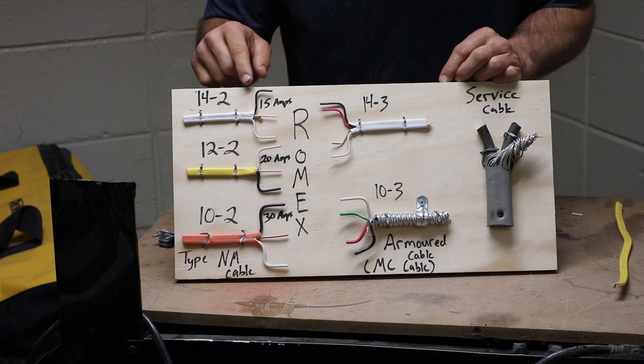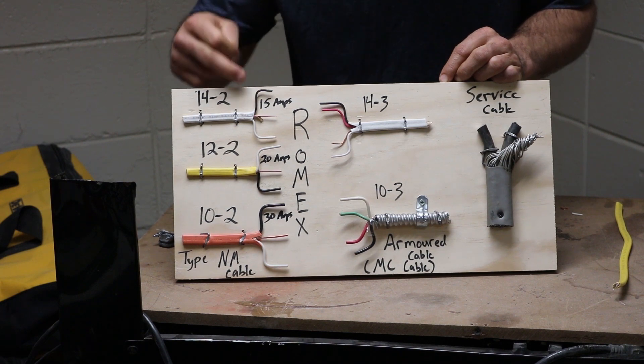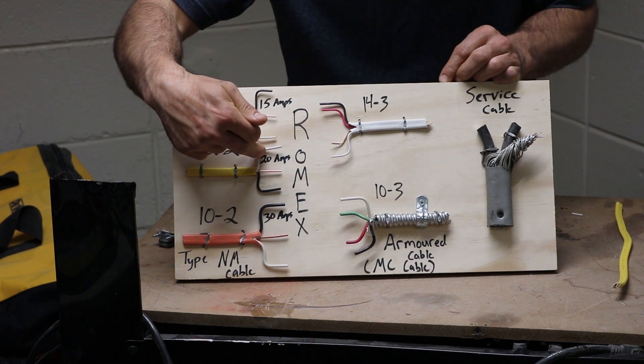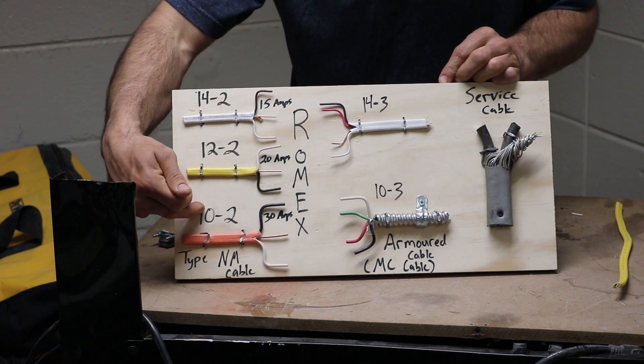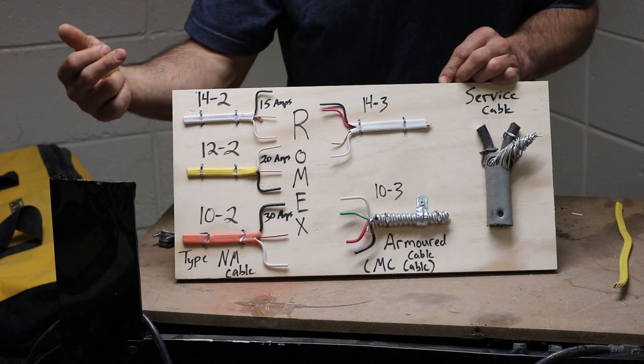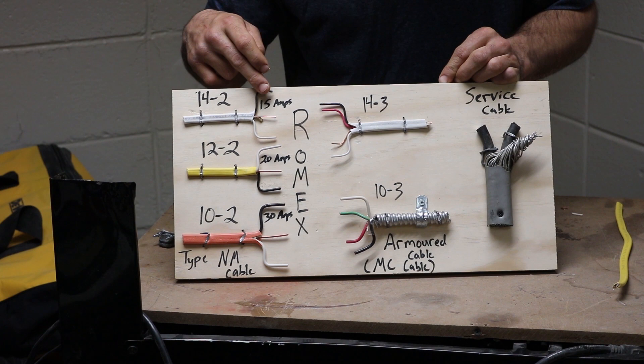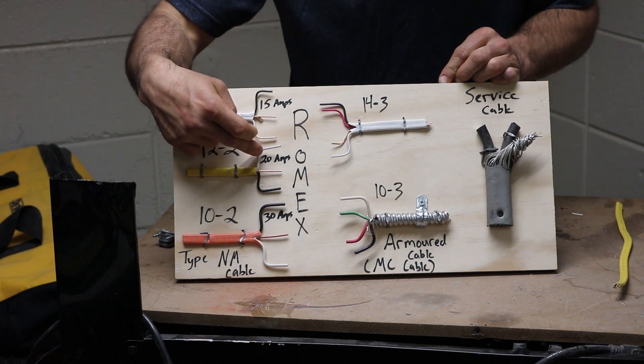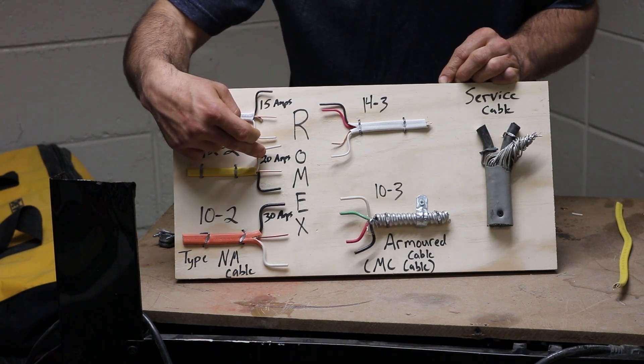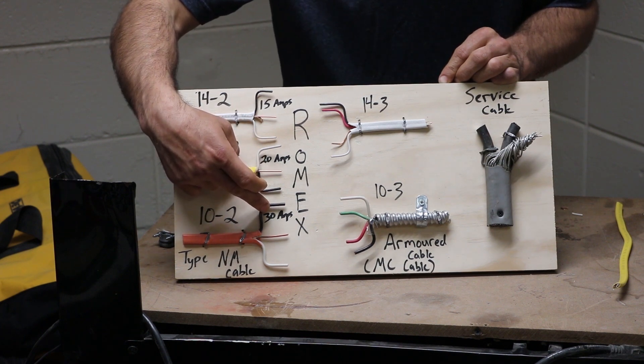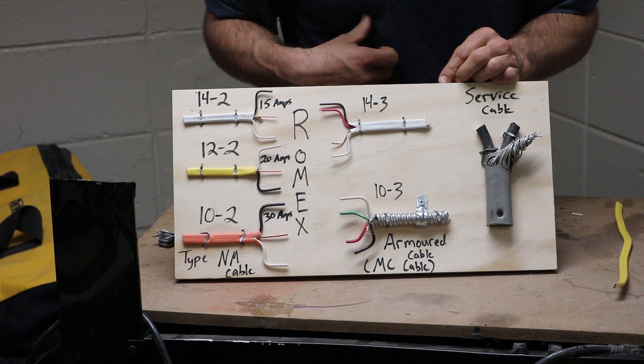Each wire can handle so many amps. A 14 gauge wire can handle 15 amps, a 12 gauge wire can handle 20 amps, and a 10 gauge wire can handle 30 amps. So if you were installing a lighting circuit, that'd be a 15 amp circuit. If you were installing maybe a kitchen appliance circuit, that would be a 20 amp circuit. And if you were installing maybe a dryer, then you would need a 30 amp circuit.